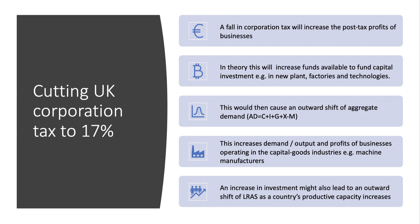That increase in investment would then trigger an outward shift of aggregate demand. The formula for AD is: AD = C + I + G + X − M. This increase in demand for capital goods would tend to increase the output and profits of businesses that make investment goods — the machine manufacturers, the construction industry, software developers, and so on.